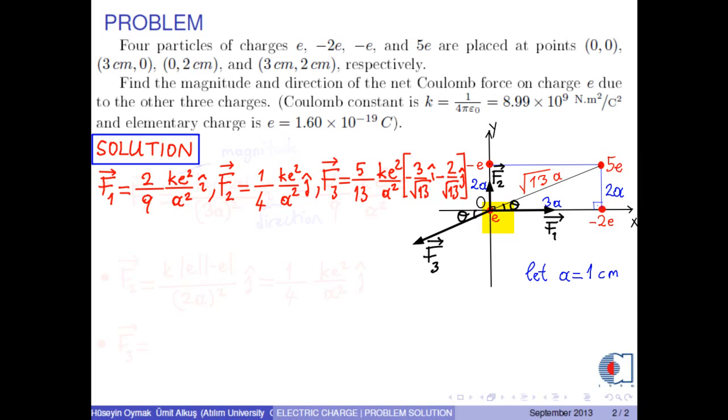Therefore, the net Coulomb force on charge E due to the other 3 charges is the sum of these 3 forces, that is, F1 plus F2 plus F3. Then, if we put the corresponding values of these forces into this formula, we obtain in the X direction 2 over 9 KE squared over A squared minus 15 over 13 square root of 13 KE squared over A squared.